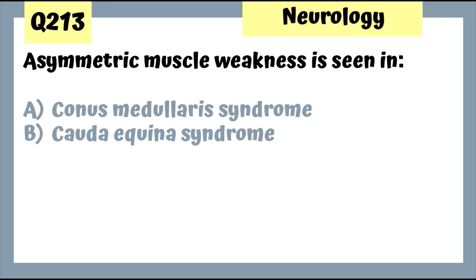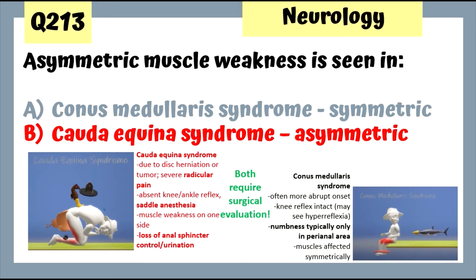Question 213: Asymmetric muscle weakness is seen in cauda equina syndrome, but both cauda equina and conus medullaris syndromes are surgical emergencies. Cauda equina syndrome is due to disc herniation or tumor and involves radicular pain, saddle anesthesia, and loss of anal sphincter control and urination. Conus medullaris syndrome often has a more abrupt onset; numbness is typically only in the perianal area, not shooting down the leg, and the muscles are affected symmetrically.